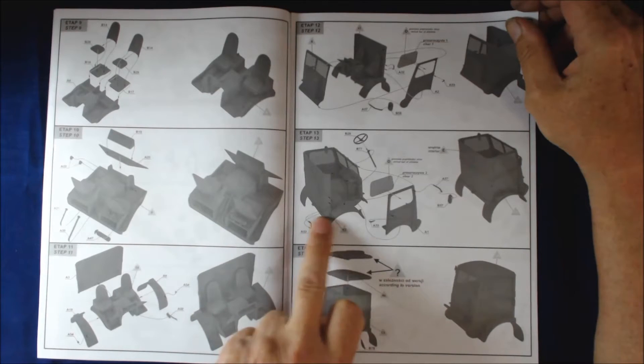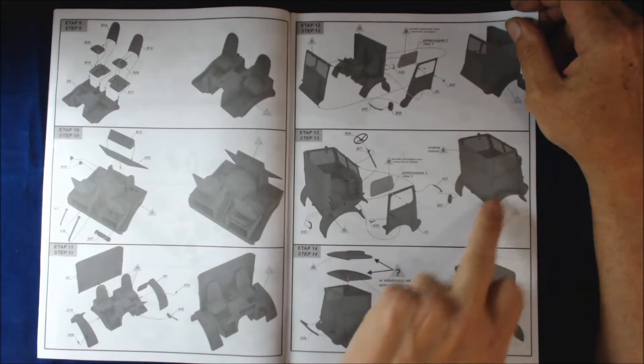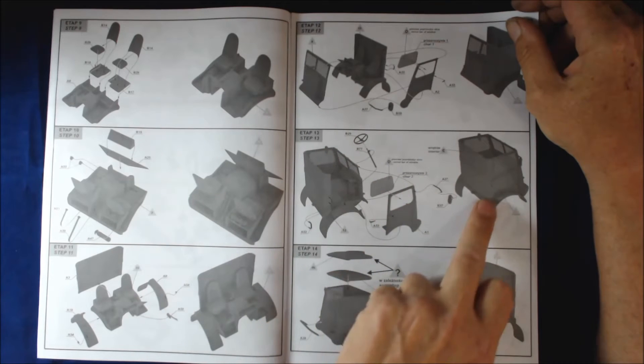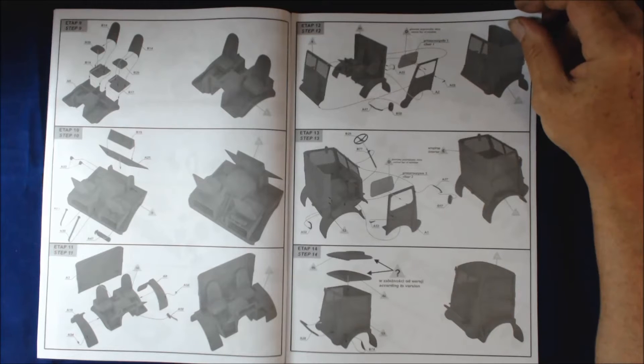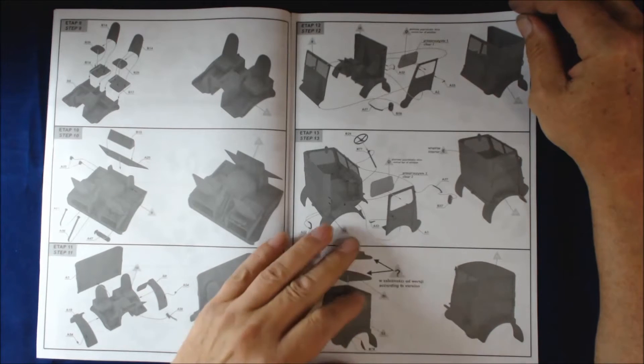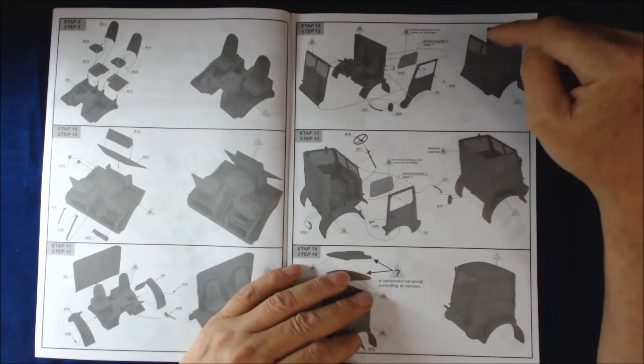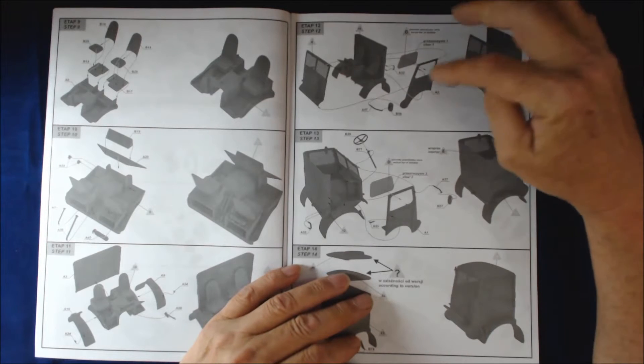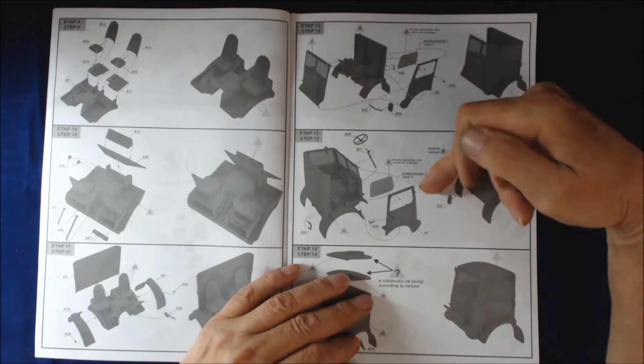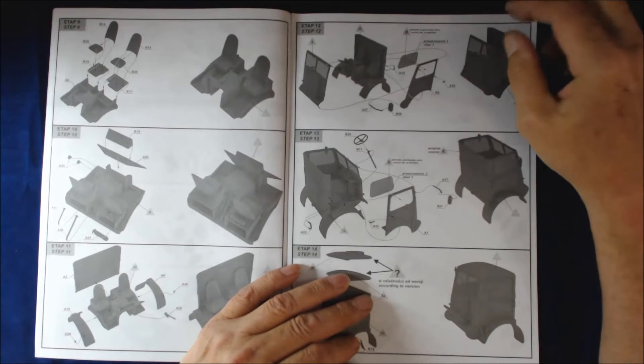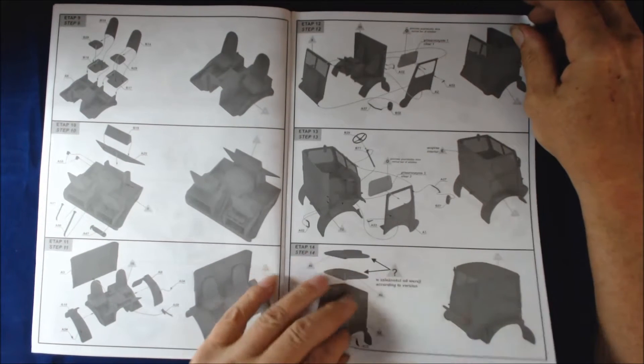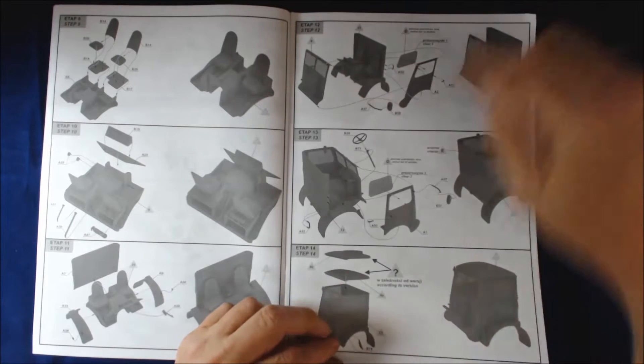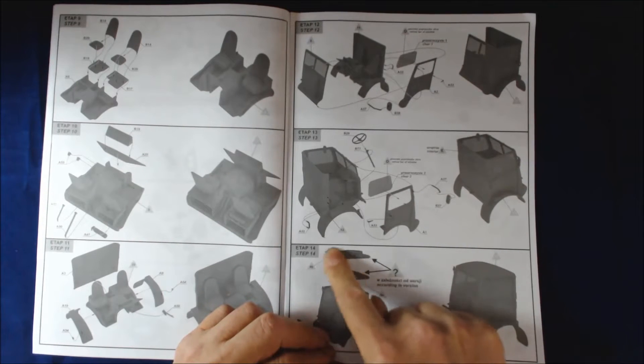The only thing I will say is when you're assembling the cab, just be aware of each corner because I put one together and it all pulled out. It wasn't the kit's fault, it was mine. If you do it the way they show you, do one side first and then go to the other side, it works properly.